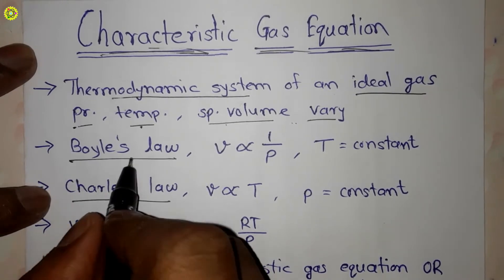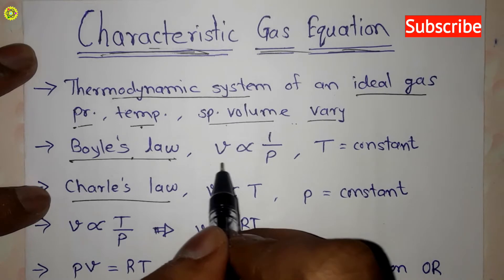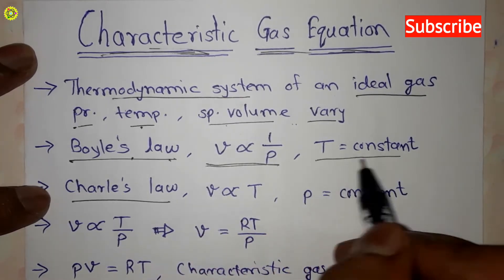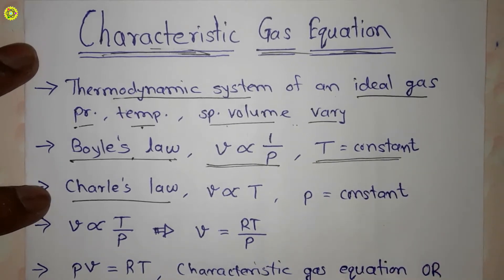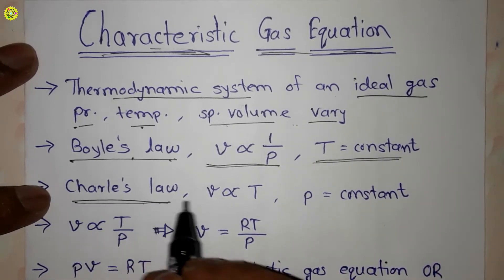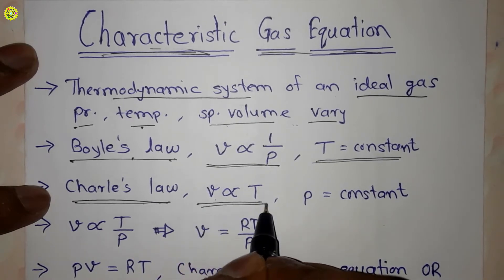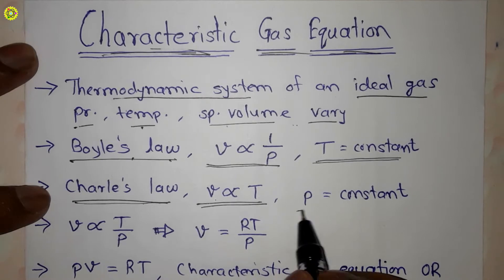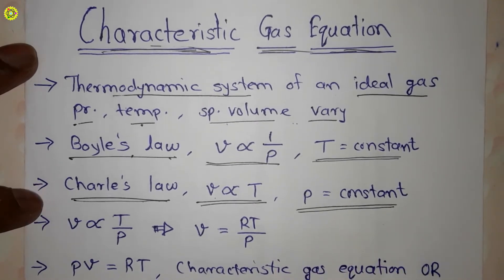Boyle's law states that the specific volume is inversely proportional to absolute pressure at constant absolute temperature. Charles' law states that the specific volume is directly proportional to absolute temperature at constant absolute pressure.